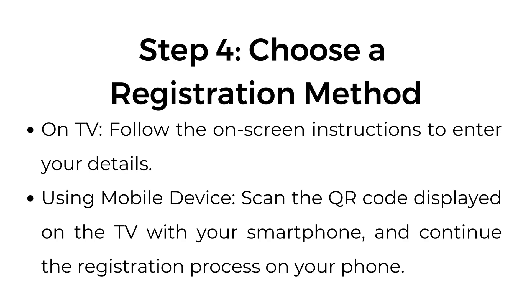Step number four: choose a registration method. On TV, follow the on-screen instructions to enter your details. Using a mobile device, scan the QR code displayed on the TV with your smartphone and continue the registration process on your phone.